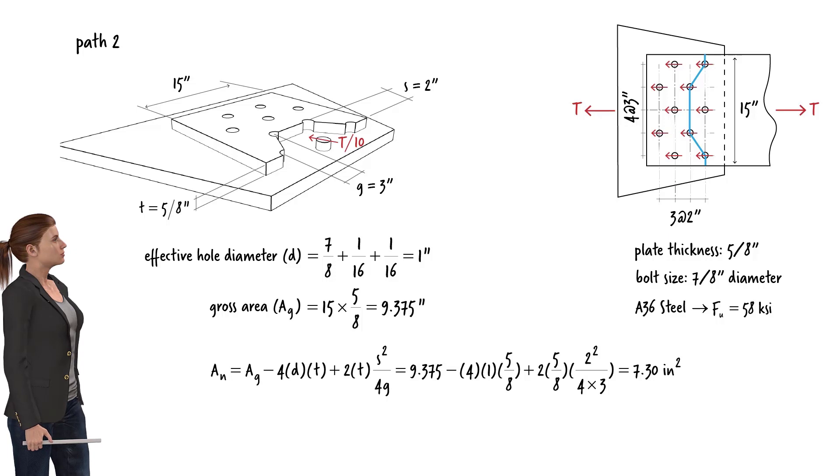Since, in our design equation, we compare the member's strength against T, for comparing this net area with the other net areas, we can multiply the calculated net area – 7.3 – by 10 over 9. So, the net area along path 2 – assuming the member along the path is subjected to the full force of T – equals 8.1 square inches.